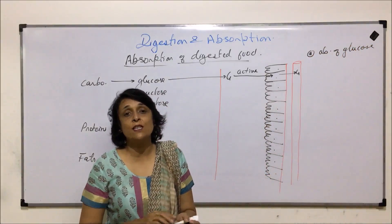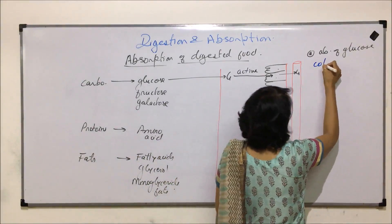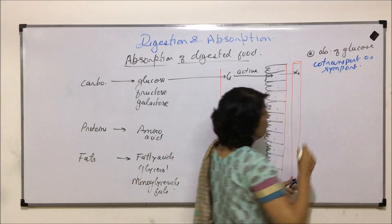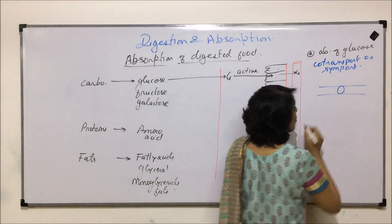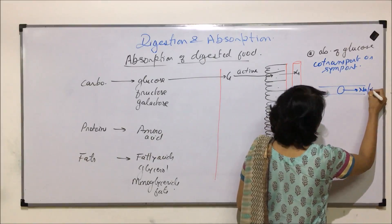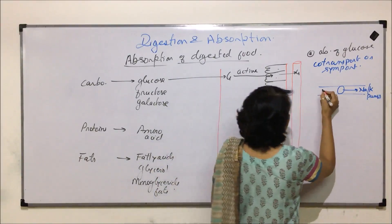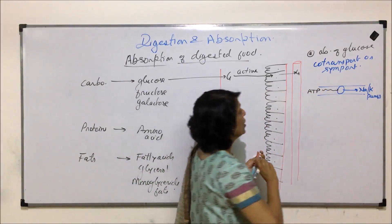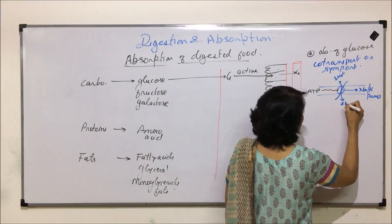Glucose absorption takes place by co-transport or symport. What exactly is this method? When we talk of the plasma membrane and a protein which is called the sodium-potassium pump — after expenditure of 1 ATP, the energy given out is used to pump 3 sodium ions out in exchange of 2 potassium ions.